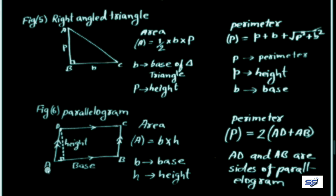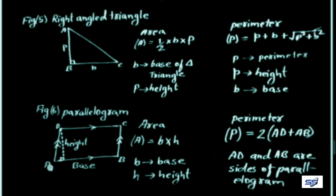To find the area of a parallelogram when height is given, the formula is: Area A = base × height = B × h, where B is the base and h is the height. Using these two values — base and height — we can find the area of the parallelogram.